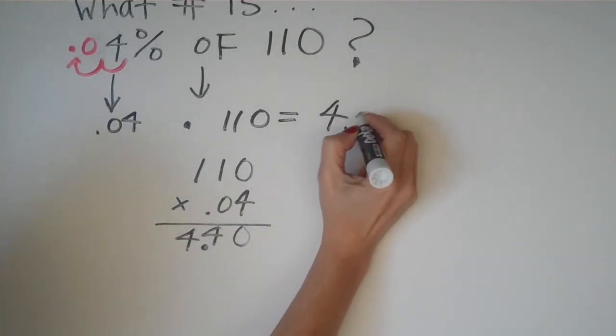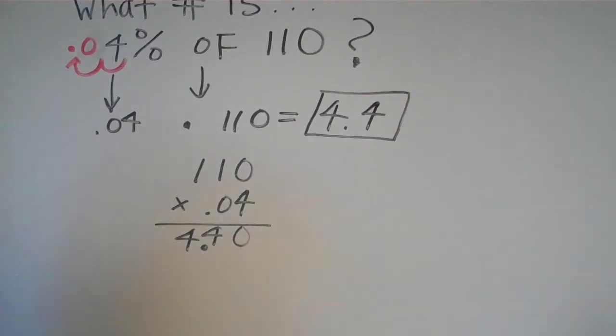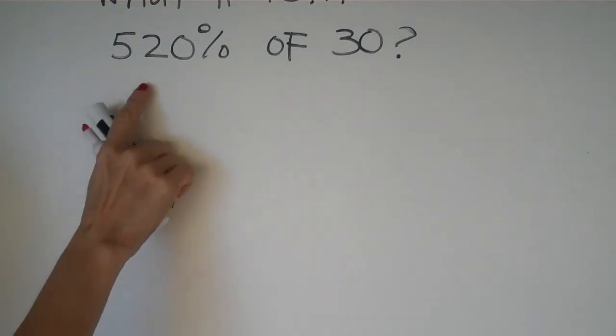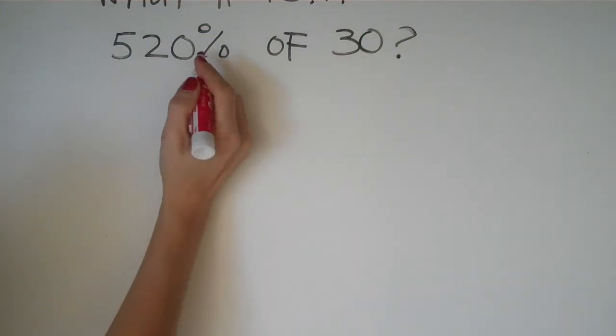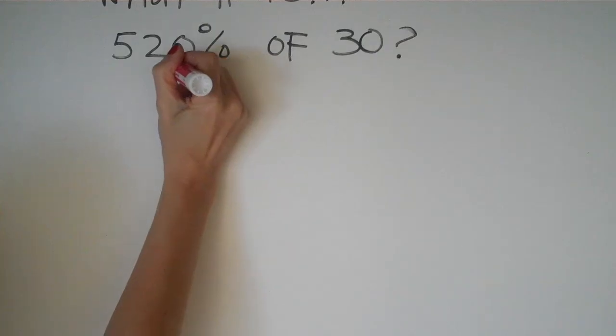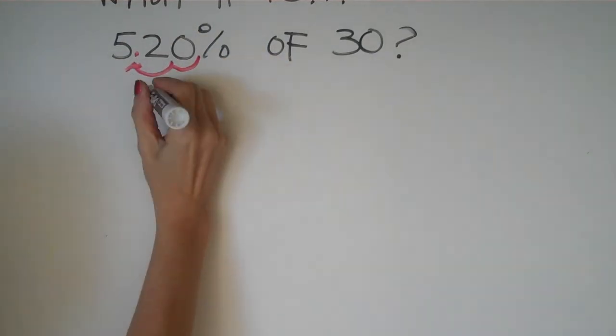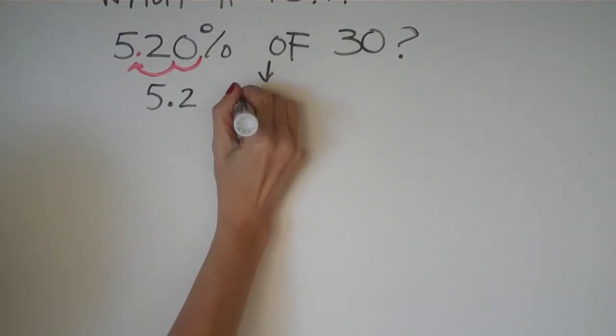This question says what is 520% of 30. Again, we have to take that percent and make it into a decimal. We're going to go two places to the left, and this becomes 5.2, of meaning multiply 30. So we'll rewrite this: 30 times 5.2.